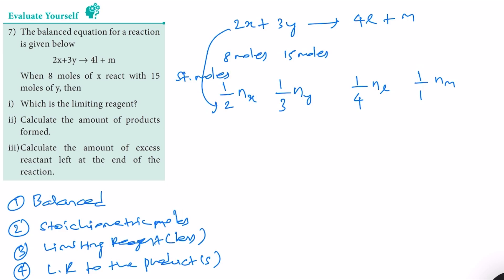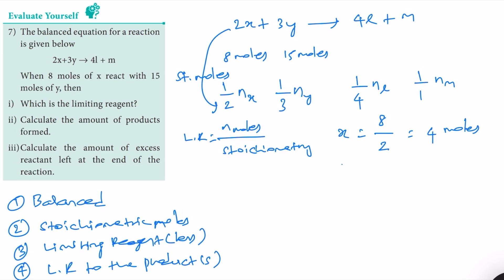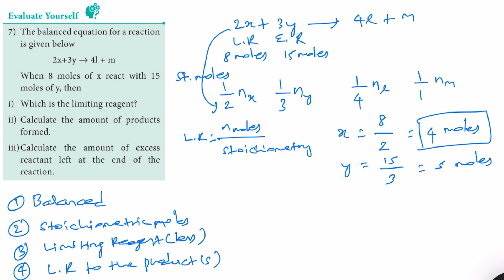Step two is done. Now we find the limiting reagent by dividing the number of moles by the stoichiometric coefficient. For X: 8 moles divided by 2 equals 4. For Y: 15 moles divided by 3 equals 5. Since X gives the smaller value of 4, X is the limiting reagent and Y is the excess reagent.